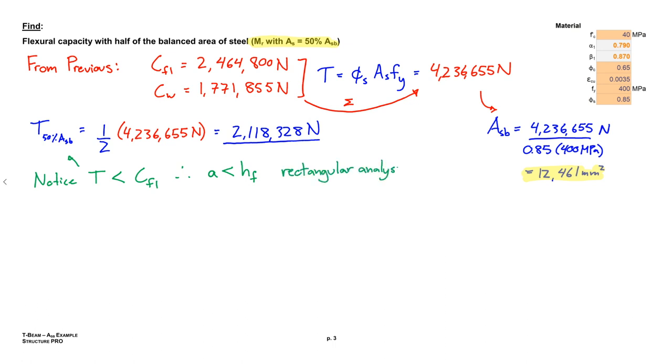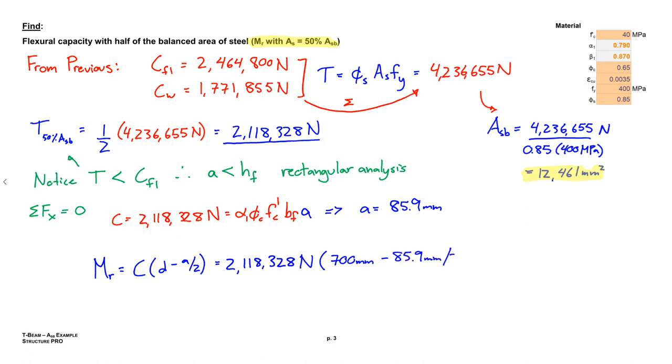So that tells us that the whole flange is not in compression, and A is less than HF, and we're dealing with a rectangular analysis in this case. So we'll ditch the CFL and the CW approach. Now we'll just have a T for tension and a C for compression resultant, because we just have a plain old rectangular analysis. So we know we can just use equilibrium, solve for A, and then plug everything into our moment equation, summing the force times the moment arm about one of the other forces. Alright, so I've done that here, and the final value we get is 1392 kilonewton meters.